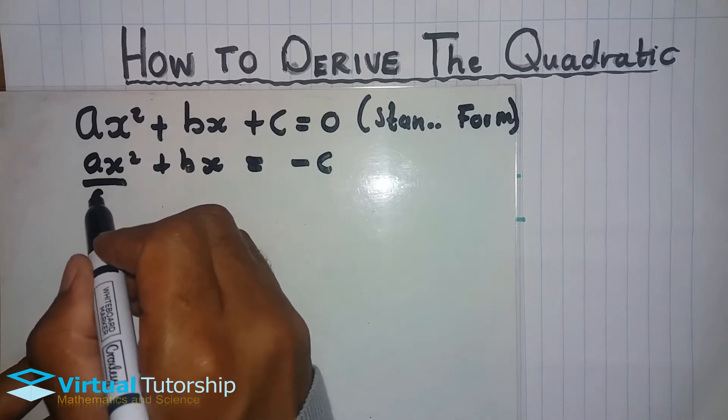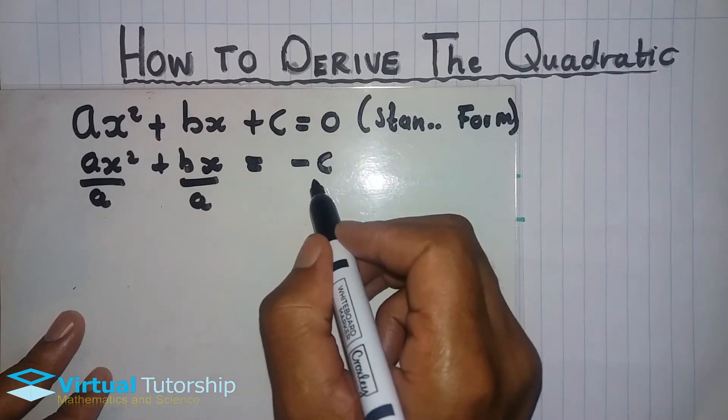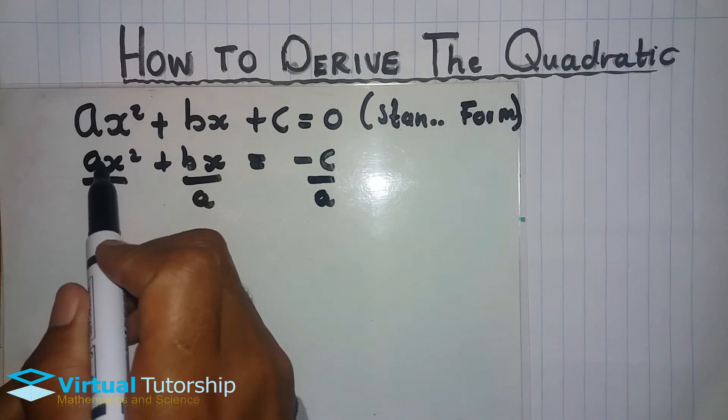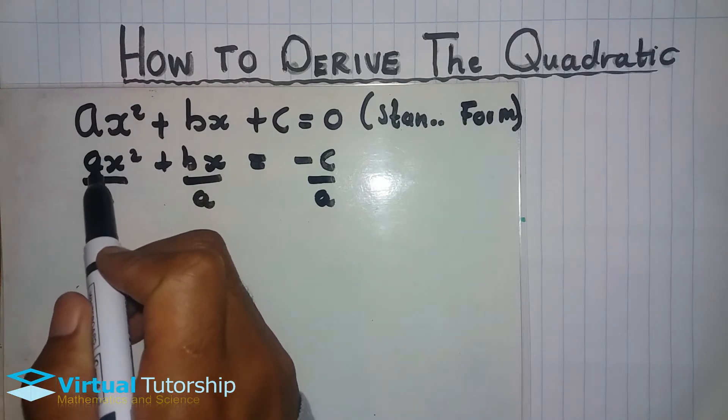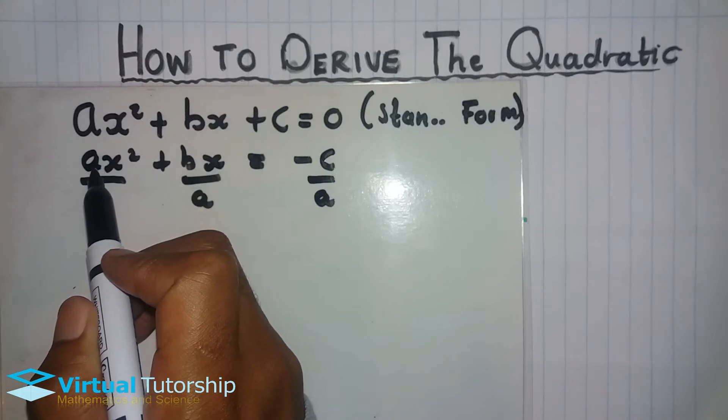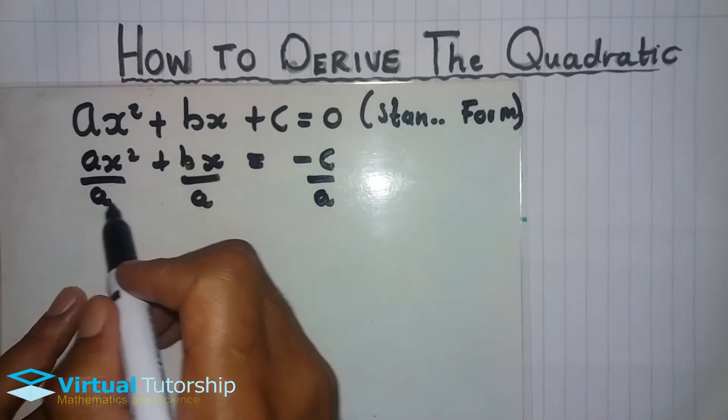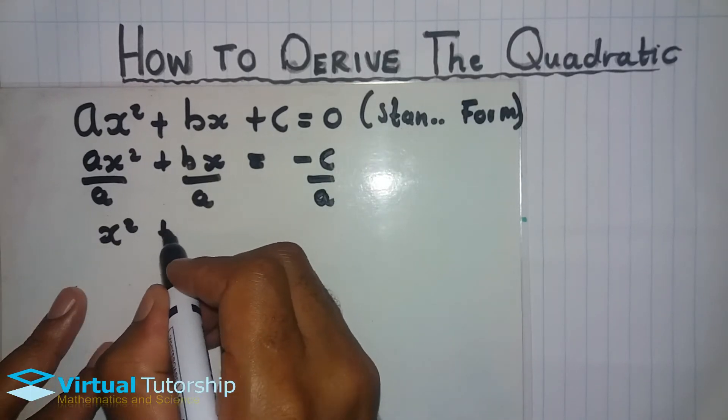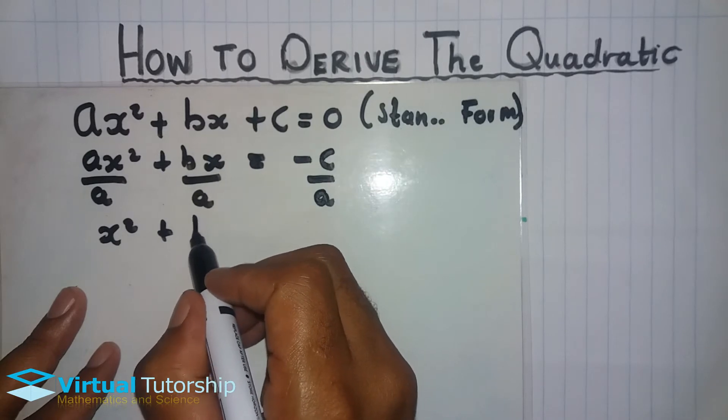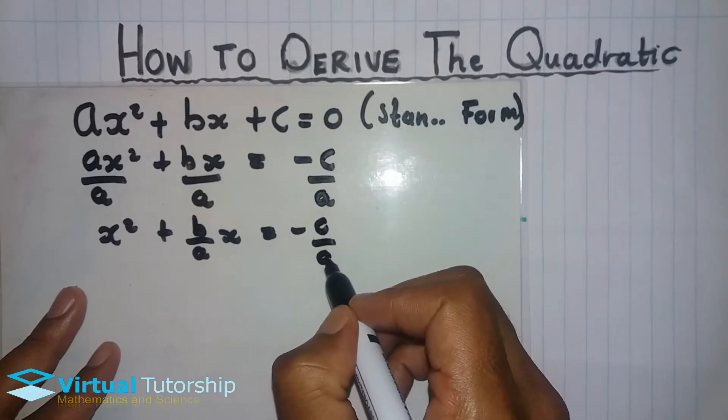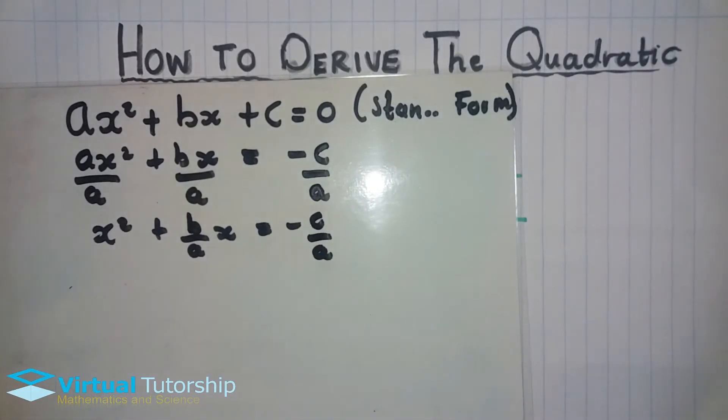You also remember, when using completing the square, the coefficient next to x² must always be positive 1. That's why we divide by a throughout the equation. So we get x² + (b/a)x = -c/a. This is the positive 1.